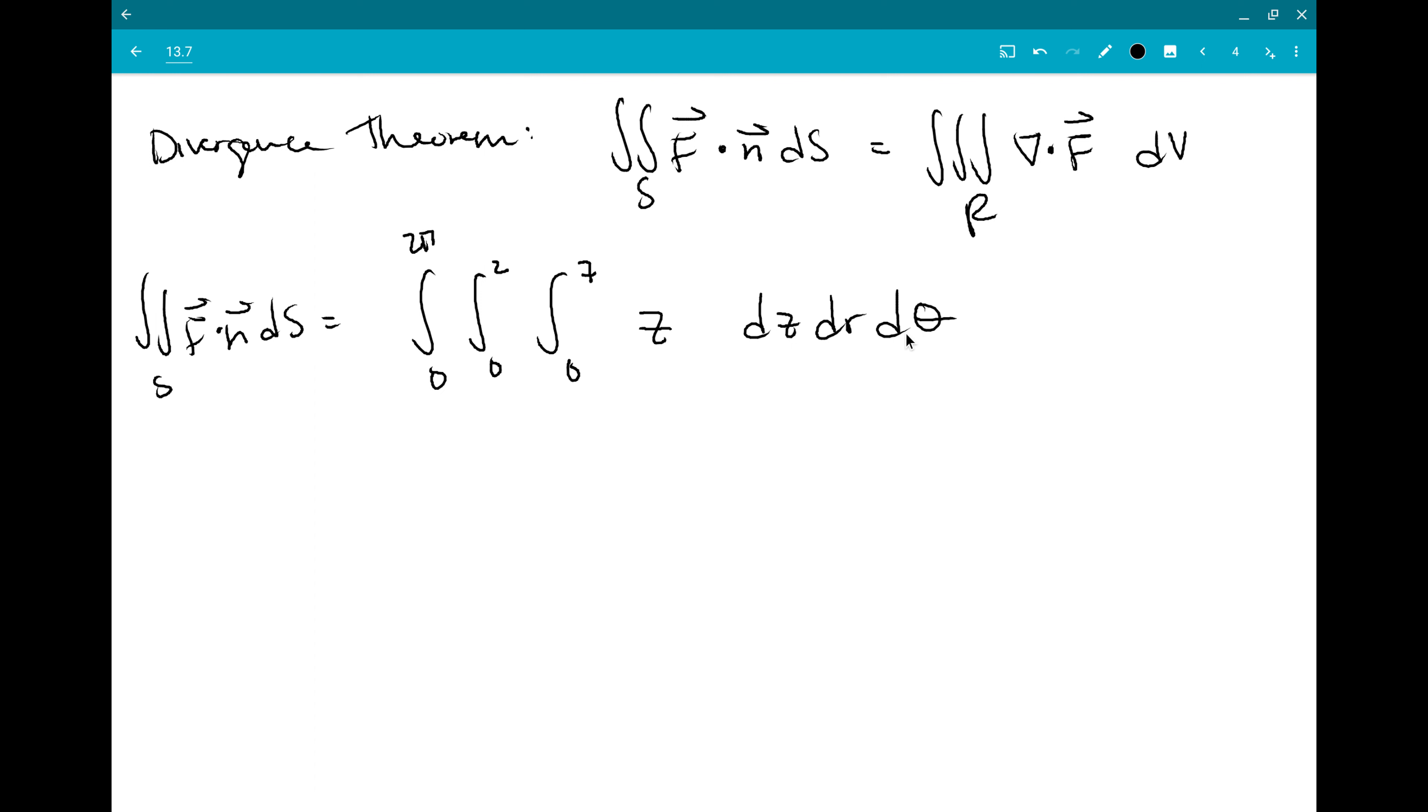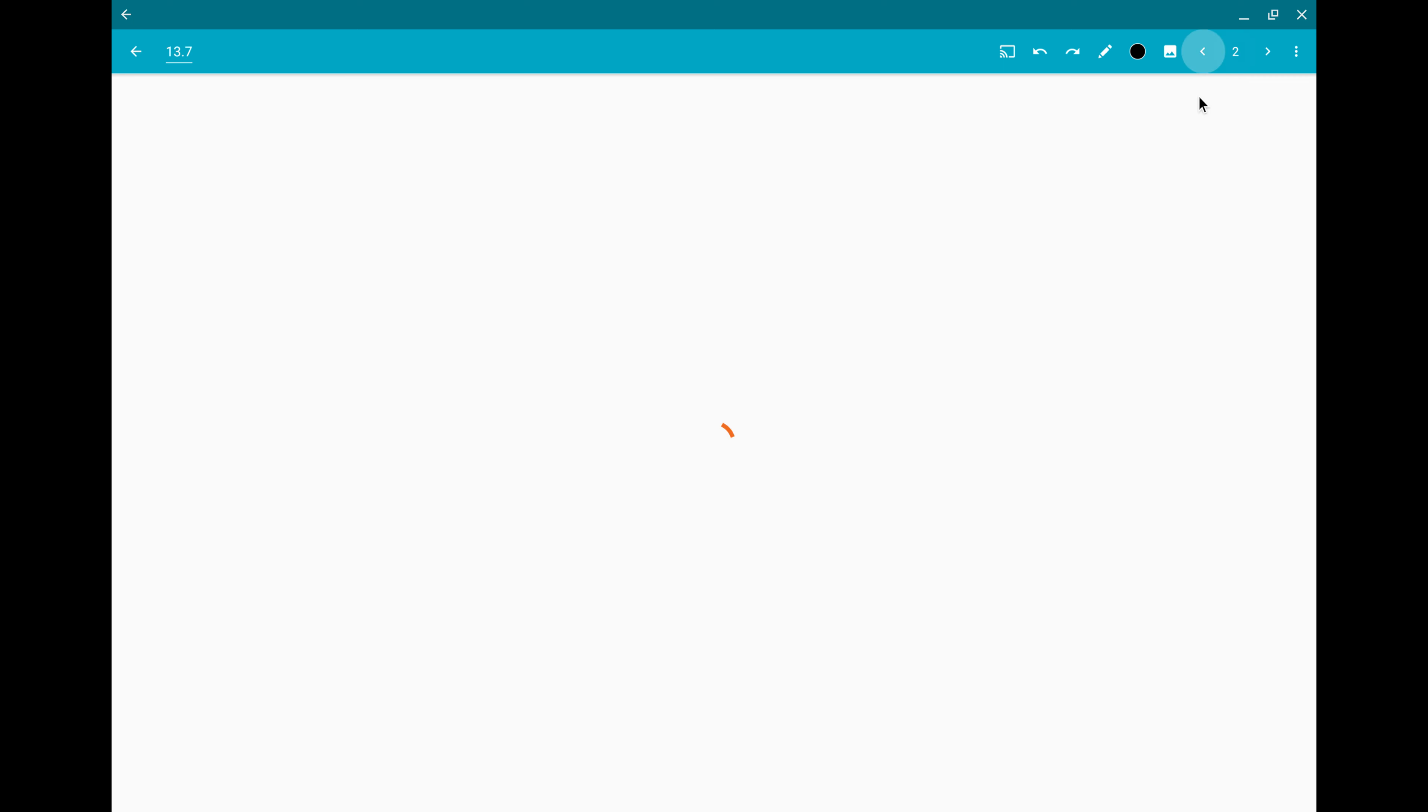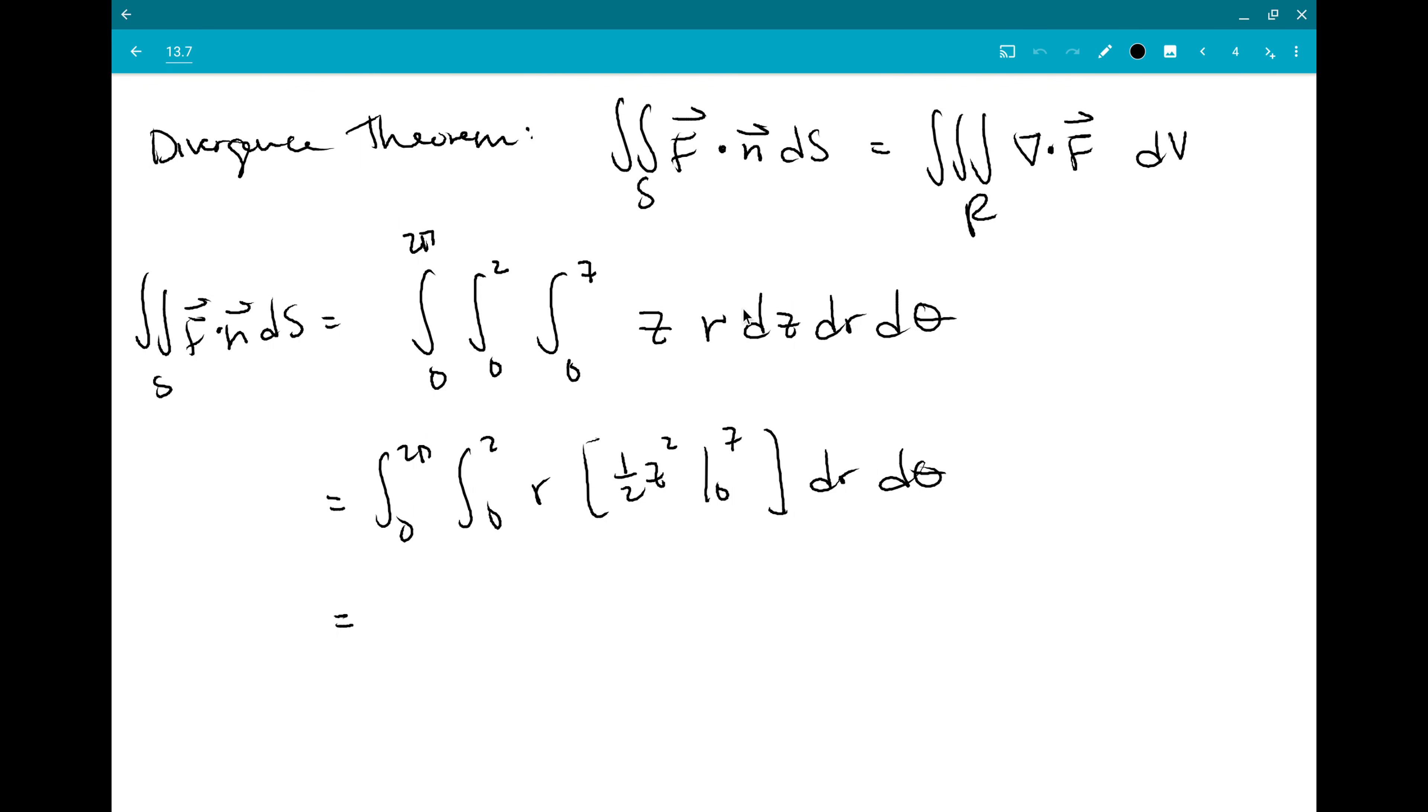And then since I'm using cylindrical coordinates, I know that I need an r right here for my r dr dθ. I just moved it inside where the z is. Okay, so let's see. First I'm going to integrate z with respect to z, so the integral of z with respect to z is one half z squared, and I take that from zero to seven. I didn't have to convert this - there was that warning convert del dot F if necessary. We're using cylindrical coordinates which permit the variable z, so we're fine.